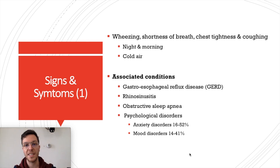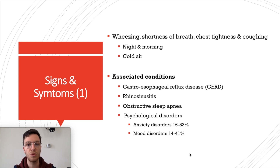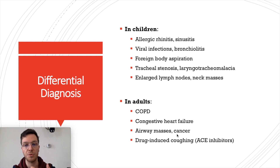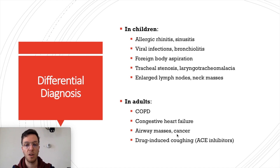Asthma also has associated conditions, including GERD, rhinosinusitis, sleep apnea, and psychological disorders: anxiety is seen in 60 to 52 percent of all people with asthma, and mood disorders in 14 to 41 percent. When you see a patient with a clinical presentation of asthma, consider other conditions. In children, it might look like allergic rhinitis, sinusitis, viral respiratory tract infections like bronchiolitis or RSV, foreign body aspiration, or tracheal stenosis.